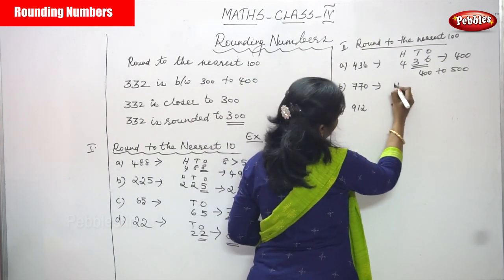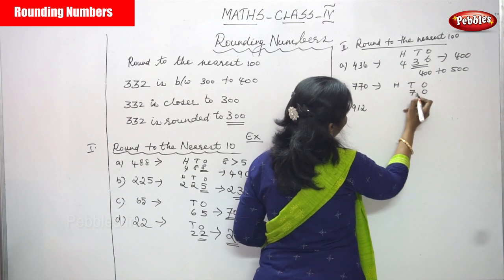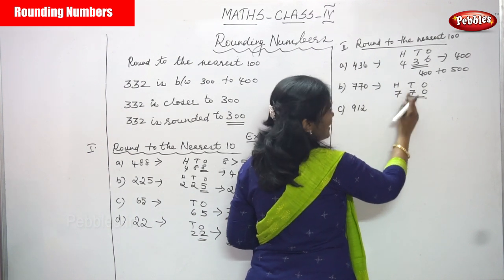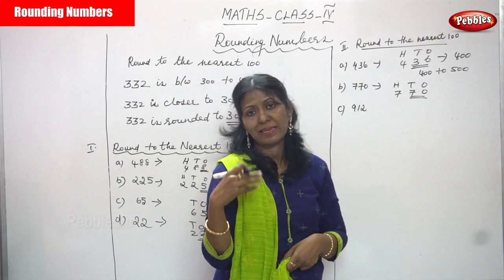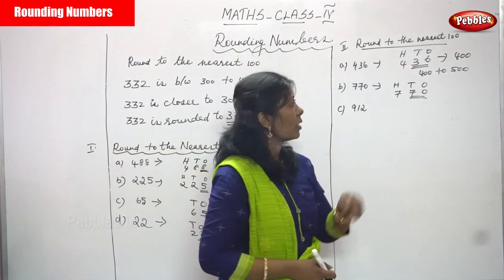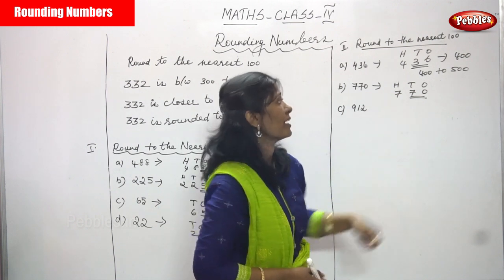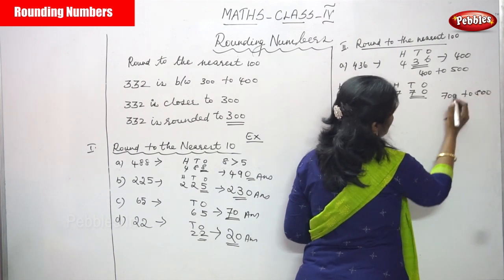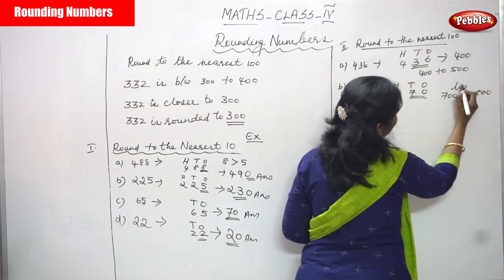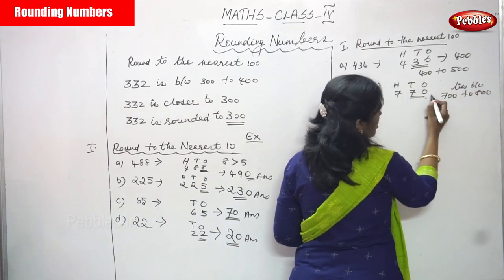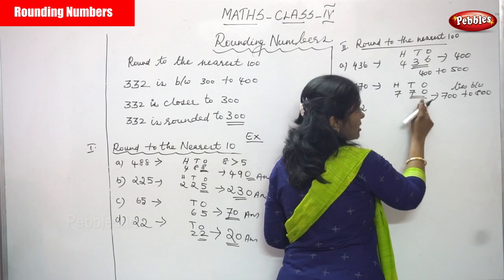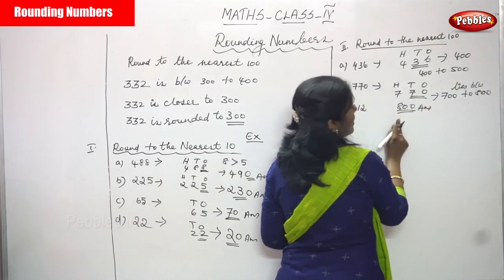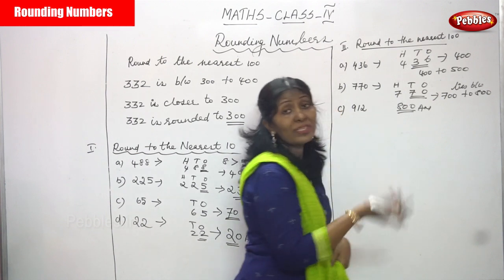Next: 770. Look at this — HTO: 0, 7, and 7. Consider the last two digits: 1's place 0 and 10's place 7, that means 70. This is greater than 50. Greater than 50 means you go to the backward direction and consider the next large number. This number lies between 700 to 800. 770 is closer to 800. The answer for round to the nearest 100 is 800.